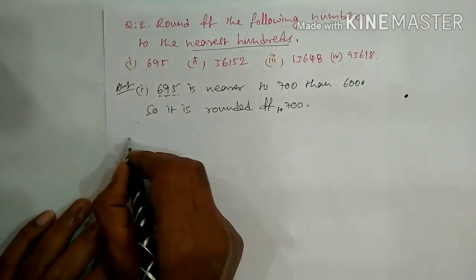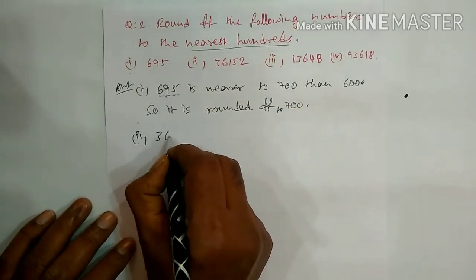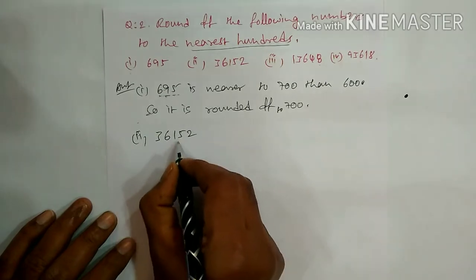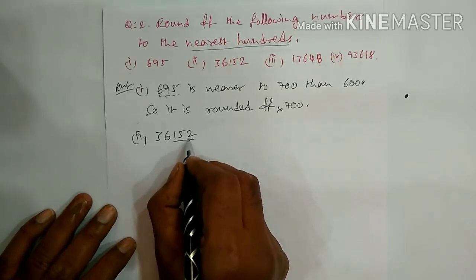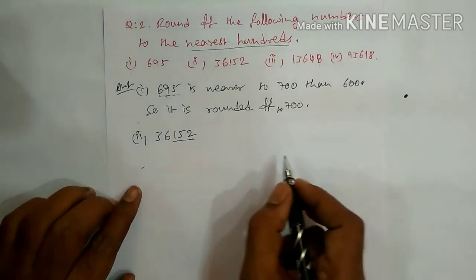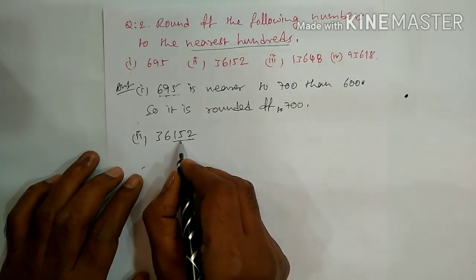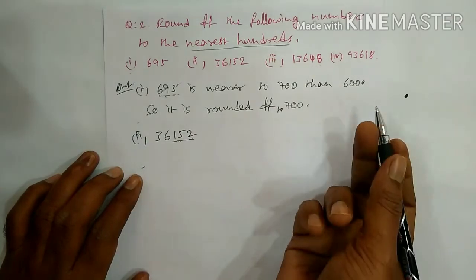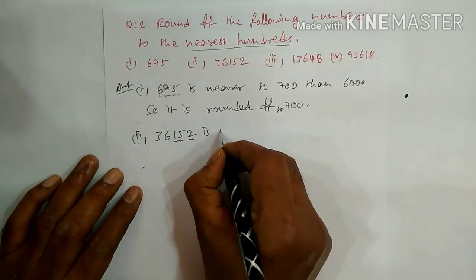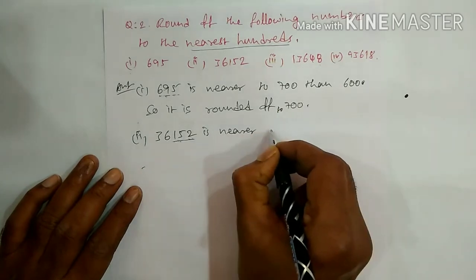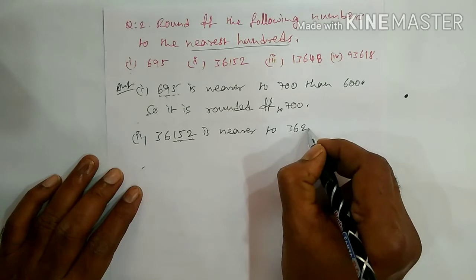695 is rounded off to 700. Second: 36152. For hundreds, we take the last three digits: 152. The range is 100 to 200, and the midpoint is 150. Since 152 is above 150, it is nearer to 200. So 36152 is nearer to 36200 than 36100, and it is rounded off to 36200.